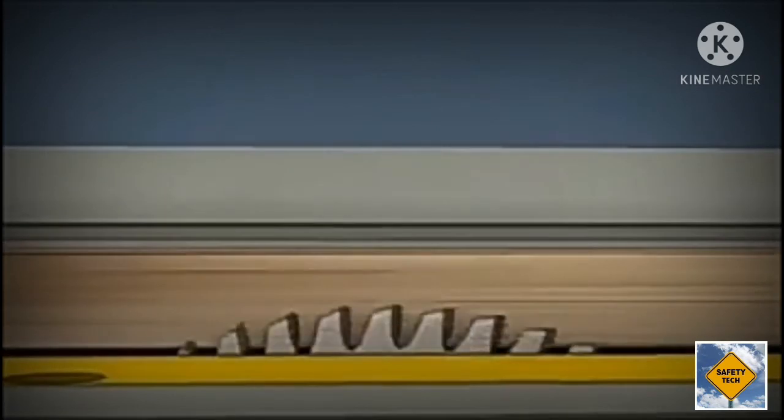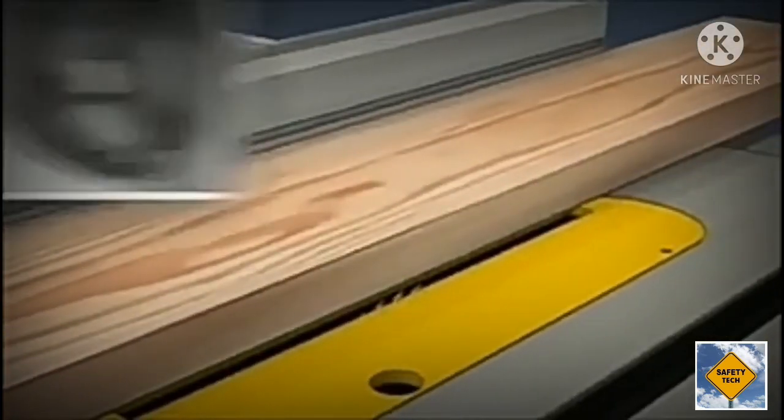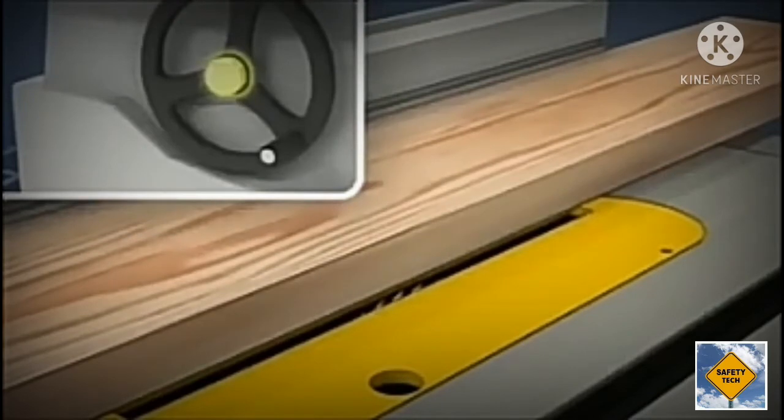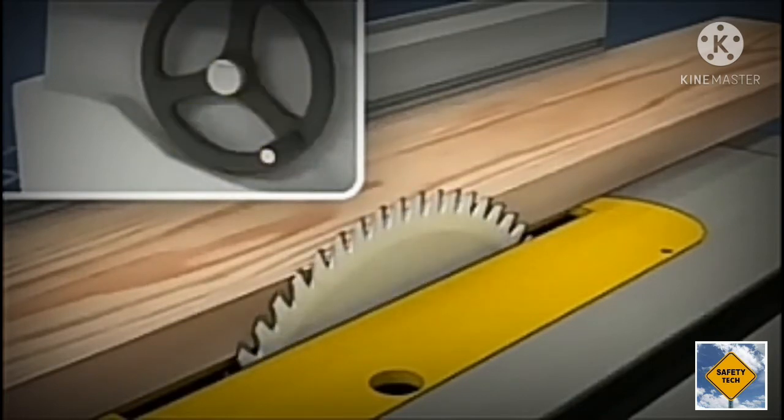The blade should be adjusted so that the top of the blade is approximately one-half inch higher than the board to be cut. To adjust the blade, first loosen the lock knob on the blade height hand wheel. Then turn the blade height hand wheel to adjust the blade to the desired height. Always tighten the lock knob after adjusting the blade height.